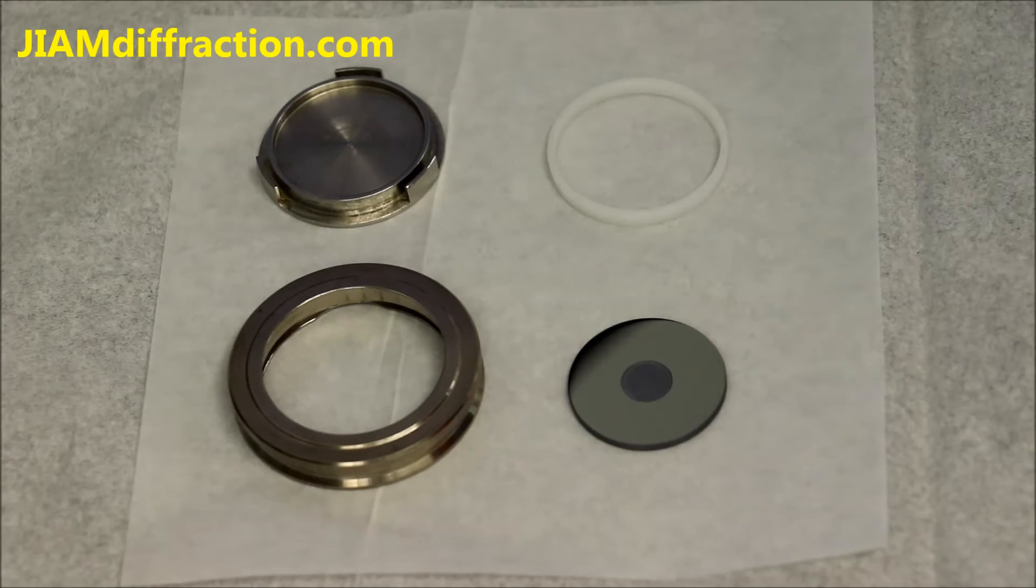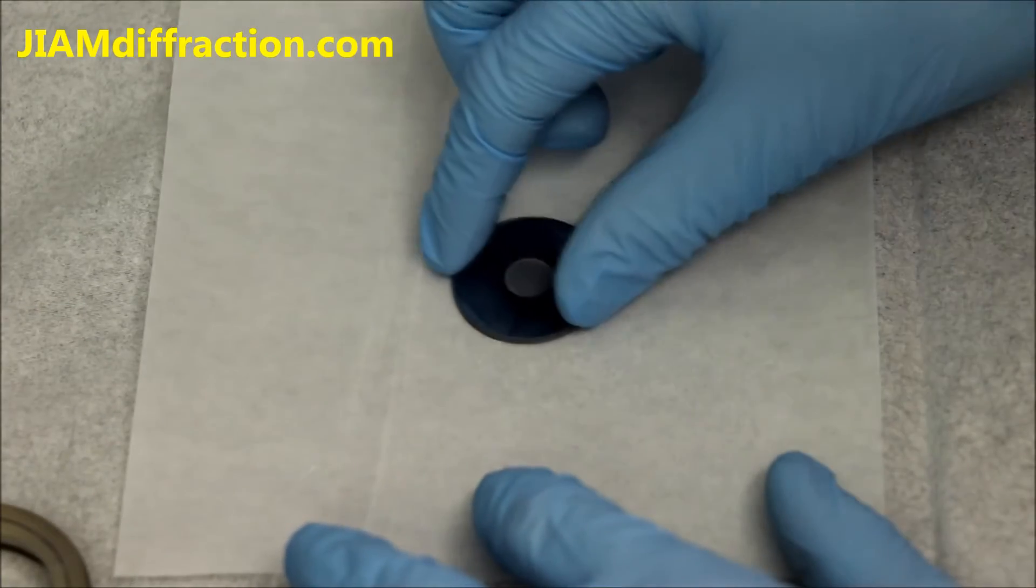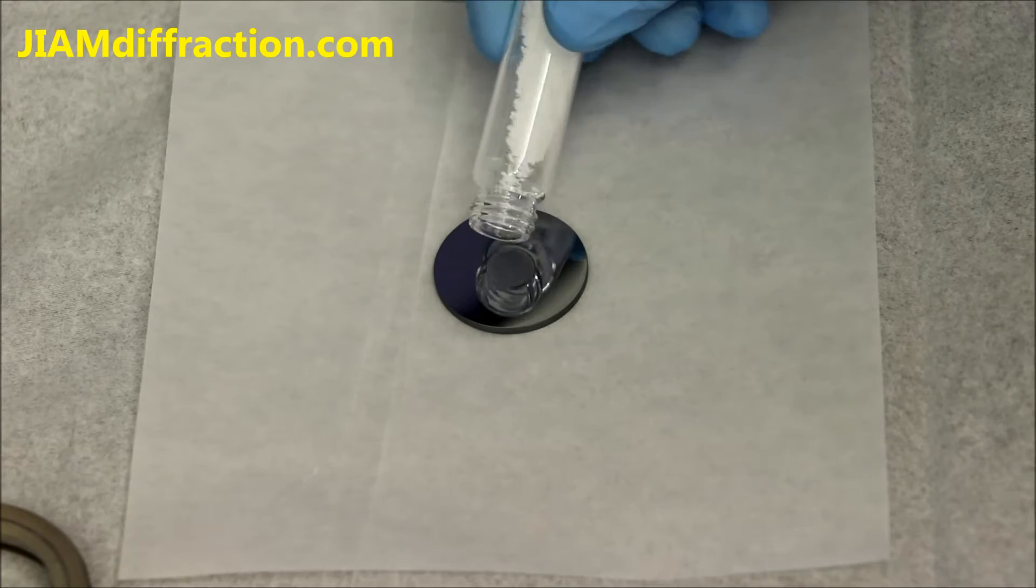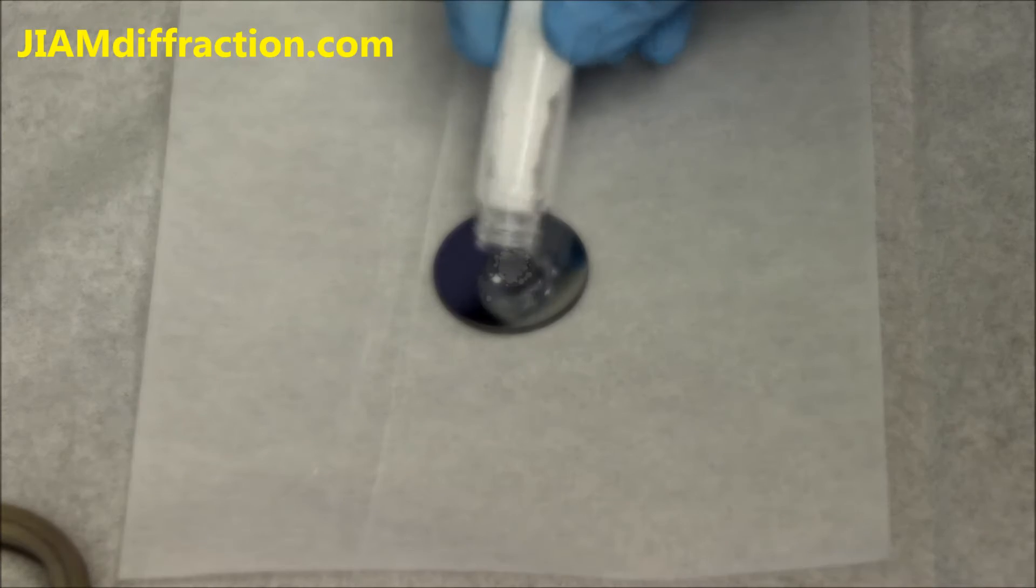So what we see here are the different parts to the sample holder. I'm going to move some of these out of the way and first prepare the powder in the sample holder. So I'll just apply a small amount of powder to it, it's a very shallow well so it doesn't take much.